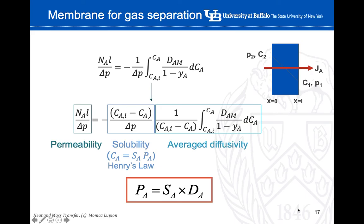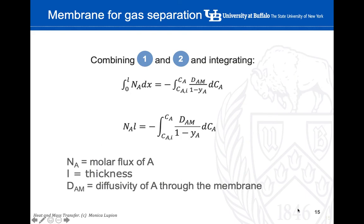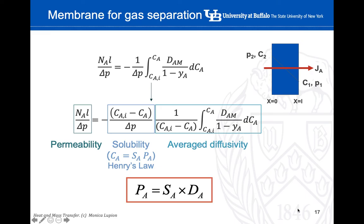Remember this is the equation we want to solve: the molar flux of A times the thickness equals an integration term. If we divide this expression by delta P on both sides — we're not changing anything — we notice that the term on the left becomes equal to the permeability. But we still need to solve the term on the right. We're going to use another trick: multiply and divide by delta C — the difference in concentration on each side — again not changing anything, just rearranging the expression.